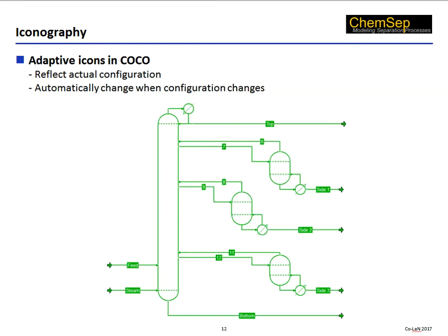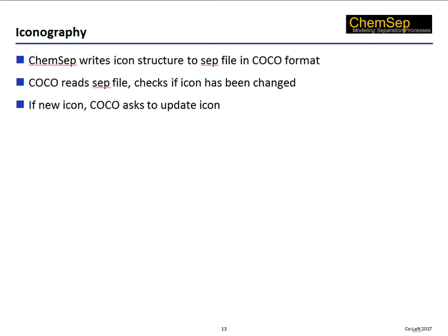This is in complete contrast to the icons in COCO. These icons reflect much more accurately the actual configuration, and moreover, they change appearance when the column configuration in ChemSat changes. This works as follows: ChemSat writes the icon structure to the SEP file in a format that COCO can recognize. COCO reads the SEP file, checks if the icon has been changed, and if so, asks the user if they want the updated icon to appear on the flowsheet. If you answer yes, then the icon is changed.